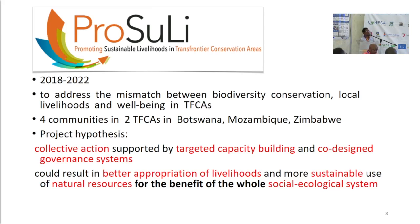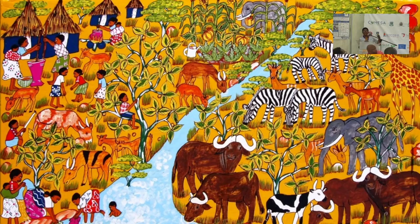This was implemented in four communities in two TFCAs in Botswana, Mozambique, and Zimbabwe, with the hypothesis that collective action supported by targeted capacity building and co-designed governance systems could result in better appropriation of livelihoods and more sustainable use of natural resources for the benefit of the whole socio-ecological system — as illustrated by the artist's depiction of the interactions, connectivities, and components in these TFCAs.